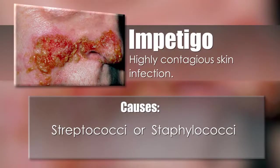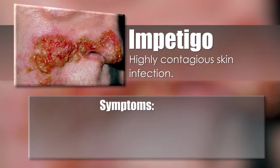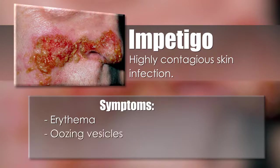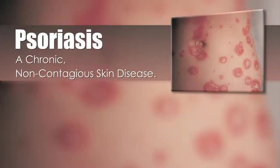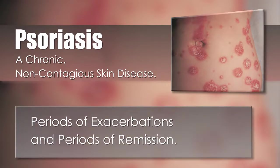Impetigo is a highly contagious skin infection usually caused by streptococci or staphylococci organisms. Symptoms include erythema, oozing vesicles, pustules, and the formation of yellow crust. Psoriasis is a chronic, non-contagious skin disease with periods of exacerbations and periods of remission.